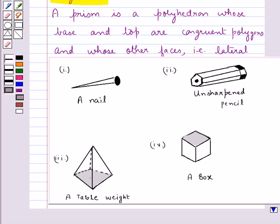Let's see the next figure that is of an unsharpened pencil. This figure is a prism because it satisfies all the conditions of the prism. The base and the top are congruent polygons and the lateral faces are parallelograms in shape. So, this is a prism.